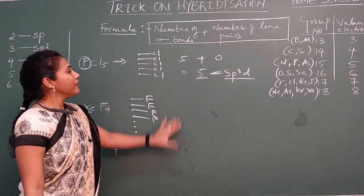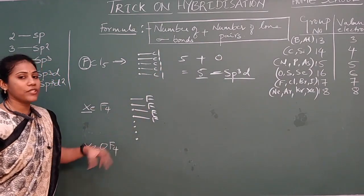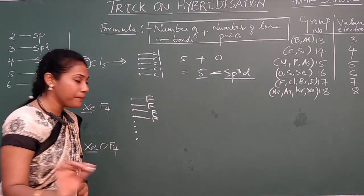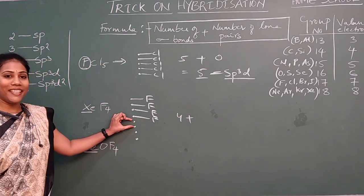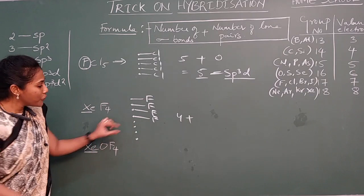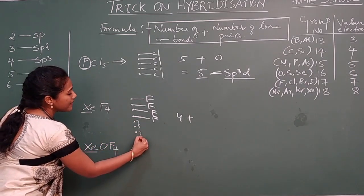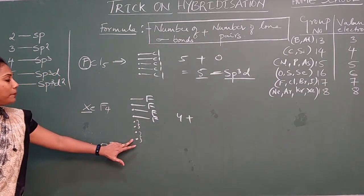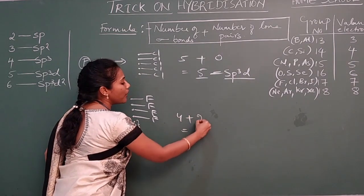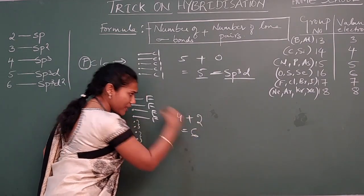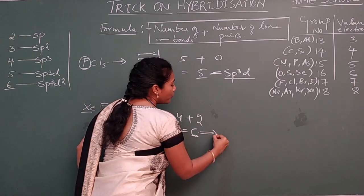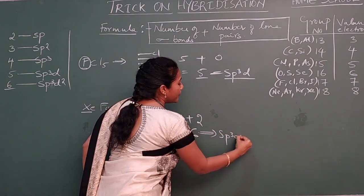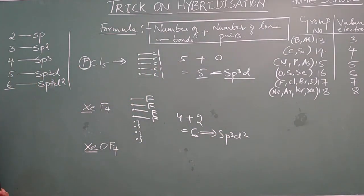Now apply the trick: number of sigma bonds = 4. Plus how many lone pairs? The remaining 4 electrons form 2 lone pairs. So 4 plus 2 = 6. If you get the digit 6, the hybridization is SP3D2. So XeF4 has SP3D2 hybridization.